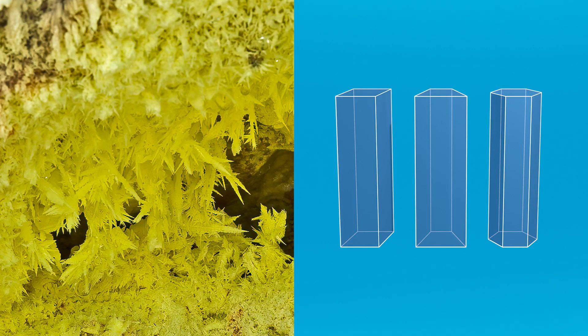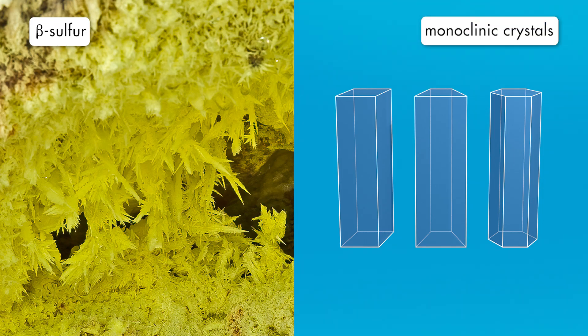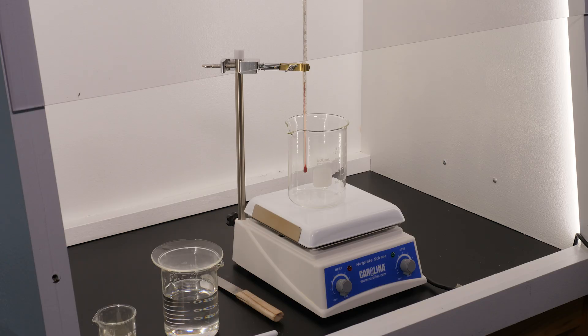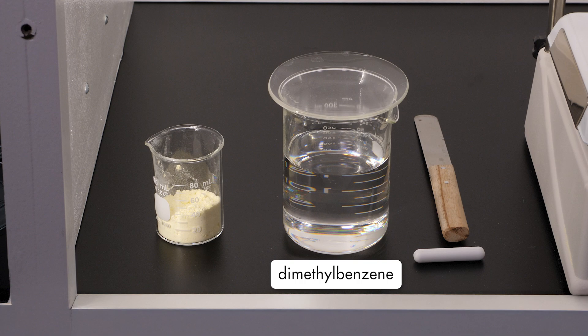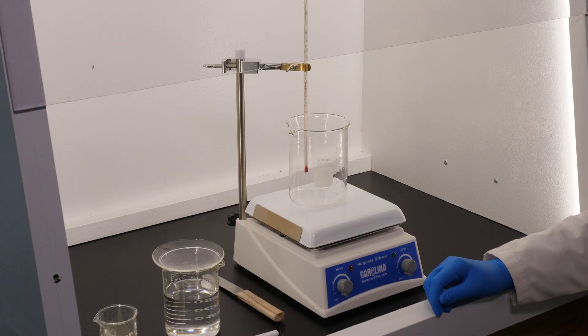The last allotrope of sulfur that we will examine is beta-sulfur. Beta-sulfur crystals are long, thin crystals called monoclinic crystals. To see beta-sulfur crystals, we start with 250 milliliters of an organic solvent called dimethylbenzene. Dimethylbenzene is flammable and mildly toxic, so this part of the experiment must be performed under a fume hood.